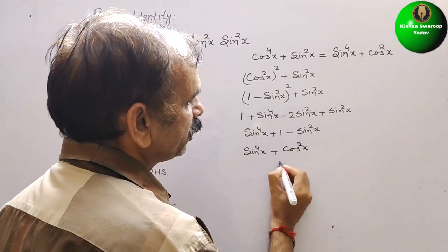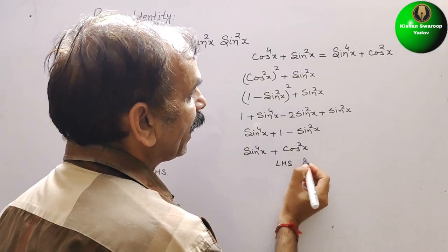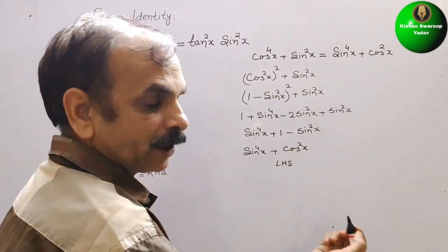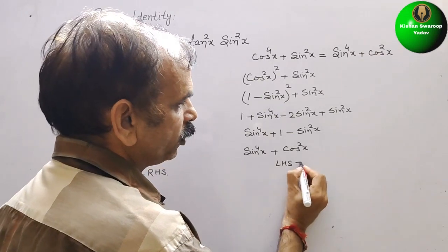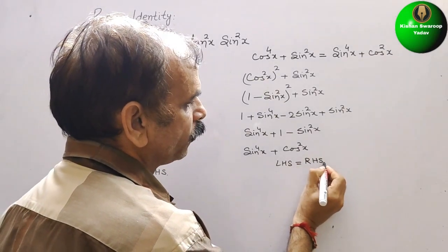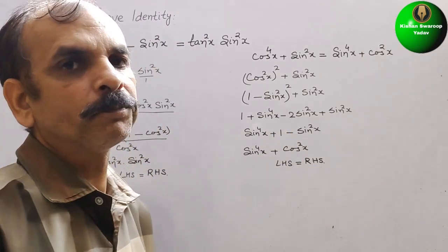So LHS equals sin to the power 4x plus cos square x, which is the same as RHS. So LHS equals RHS. Like this we have to prove it.